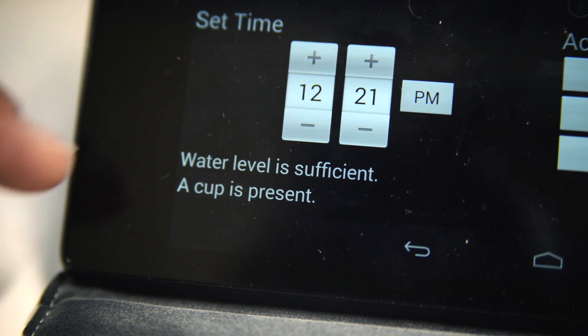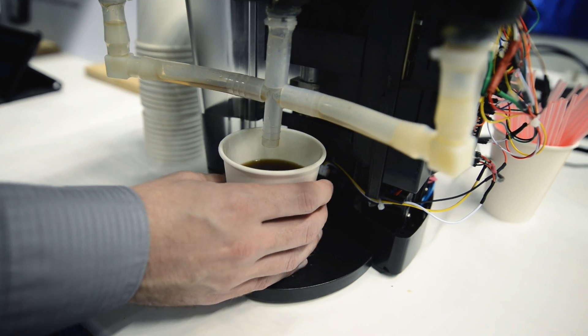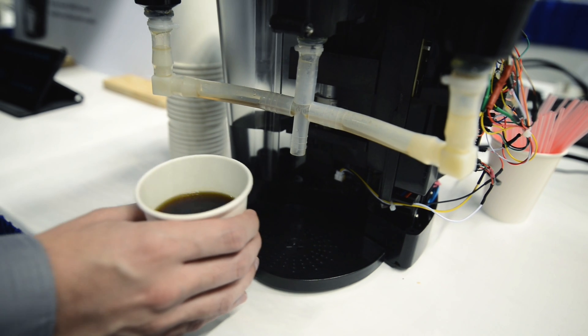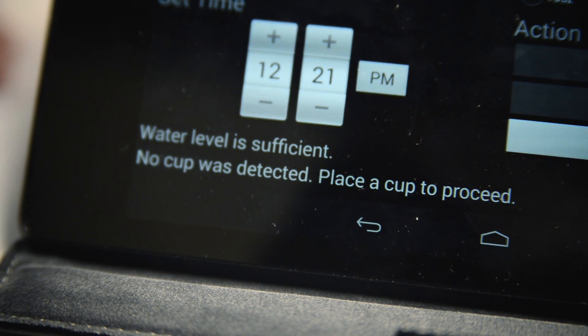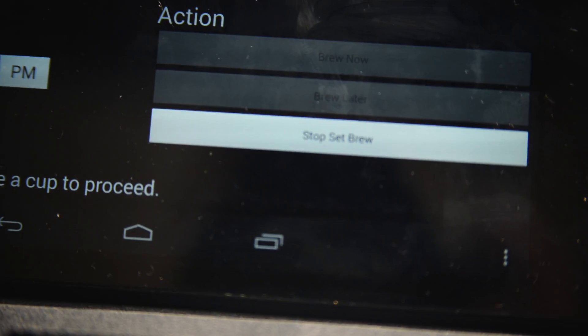This is telling us that the water level in the Keurig is sufficient and that a cup is present under the brew head. If we remove the cup, it says that a cup is no longer detected. These two buttons are deactivated so you can no longer brew.